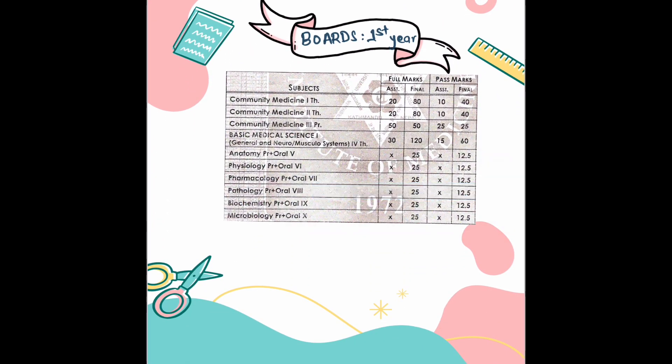Regarding boards, basic science theory is about 150 marks, with practicals separately at 25 marks each. Community medicine and IBMS have almost equal weightage — 300 and 300. Comparatively, IBMS is very difficult and challenging compared to community medicine.